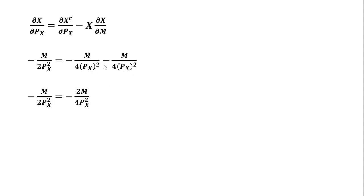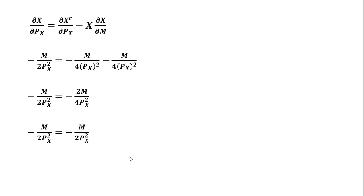Simplifying the right-hand side, we get negative 2m divided by 4 times the price of good x squared, and simplifying further confirms that the left-hand side equals the right-hand side, so we did this problem correctly. I hope you found this video helpful.